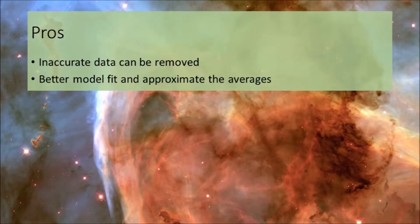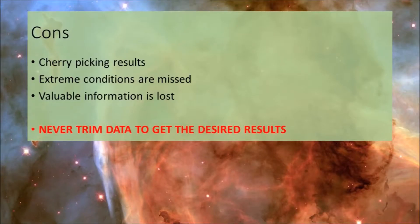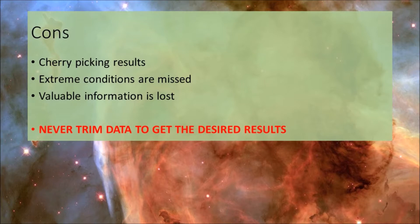The pros of trimming: inaccurate data can be removed, improving accuracy and readability of results. The second pro is better model fit and better approximation of averages — useful in scenarios where extreme outliers on both ends aren't desired. The cons: this results in cherry-picking of results. In bold and red: never trim data to get the desired results. I see this consistently in industry and academic papers — people remove outliers one by one to match their expected logic. This is extremely wrong and should not be done.